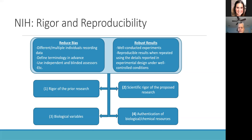The fourth and final area is authentication of key biologic or chemical resources. This is fortunately added as a separate attachment, but can be highlighted in the grant in various places describing how you're going to authenticate resources. In the attachment, you want to provide sufficient description of the methods that ensure the validity of your key biologic or chemical resources proposed for use in the study. All four of these aspects are expected to be included in any grant application.